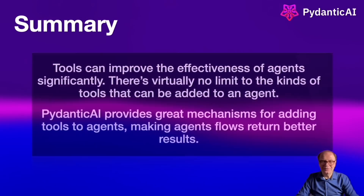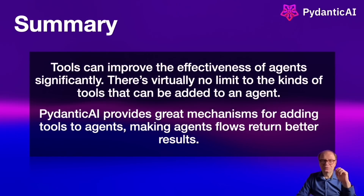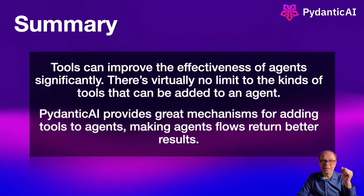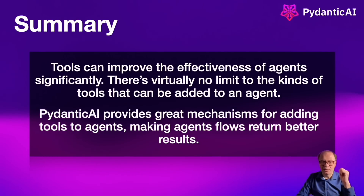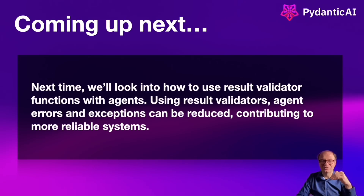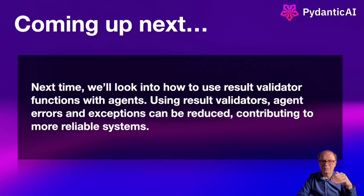Let's do a quick summary. Tools can improve the effectiveness of agents significantly. There is virtually no limit to the kinds of tools or code that we can implement inside a tool function, since it's basically plain Python code. PyDantic AI provides great mechanisms for adding tools to agents — we went over three different methods of how to define a tool and register it with an agent. Next time we'll look into how to use result validator functions with agents. Using result validators, agent errors and exceptions can be reduced, contributing to more reliable agent flow.